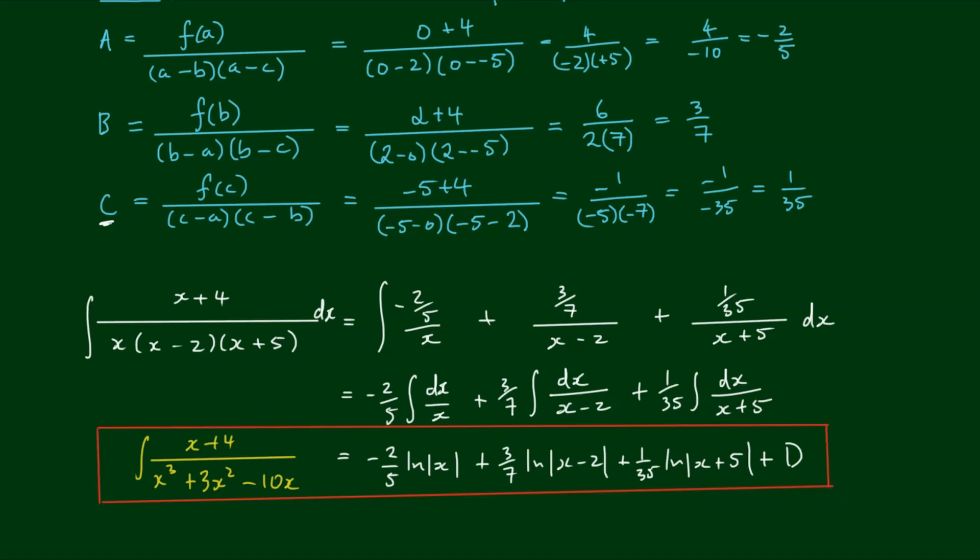Before we finish, I made a mistake because for constant C on the bottom we have negative 5 times negative 7, and when we multiply two negatives we get a positive. So it should be positive 35, therefore C should be negative one thirty-fifth. This means we get negative one thirty-fifth on x plus 5, minus one thirty-fifth by the integral of dx on x plus 5, which gives us negative one thirty-fifth by the log of x plus 5.